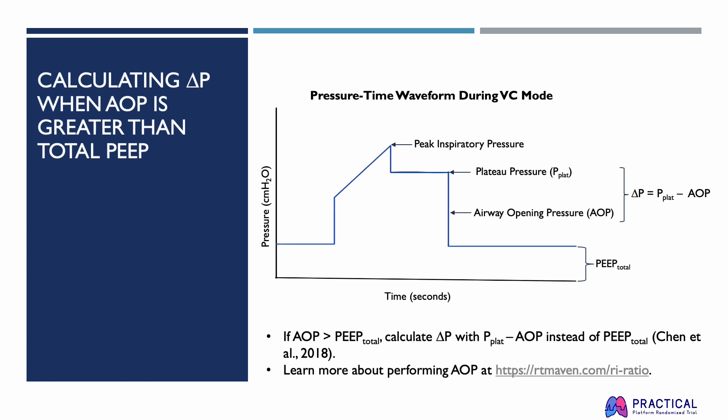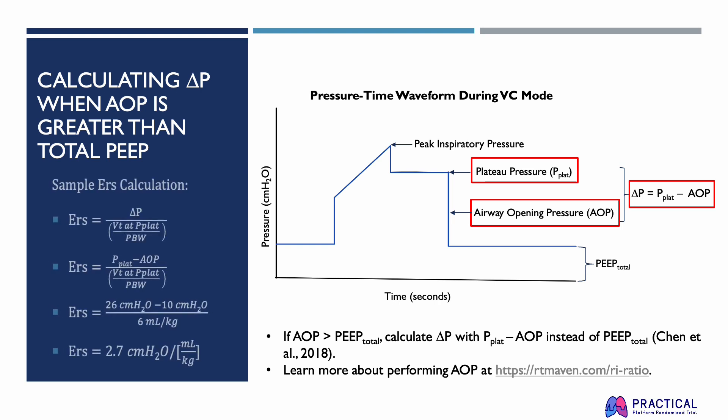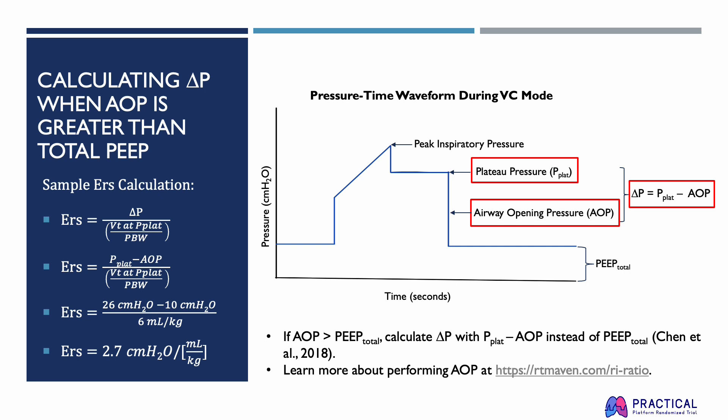A study by Chen et al. from 2018 suggests that there may be instances where patients have an airway opening pressure greater than the total PEEP. Driving pressure is calculated during these scenarios by looking at the difference between plateau pressure and airway opening pressure. You can learn more about how to perform airway opening pressure measurements by visiting rtmaven.com/ri-ratio. Assuming airway opening pressure is greater than the total PEEP for the video example, ERS would be calculated as: ERS equals plateau pressure minus airway opening pressure divided by tidal volume at plateau pressure divided by the predicted body weight. In this example, it equals 26 centimeters of water minus 10 centimeters of water divided by 6 milliliters per kilogram, giving an ERS of 2.7 centimeters of water per milliliter per kilogram.